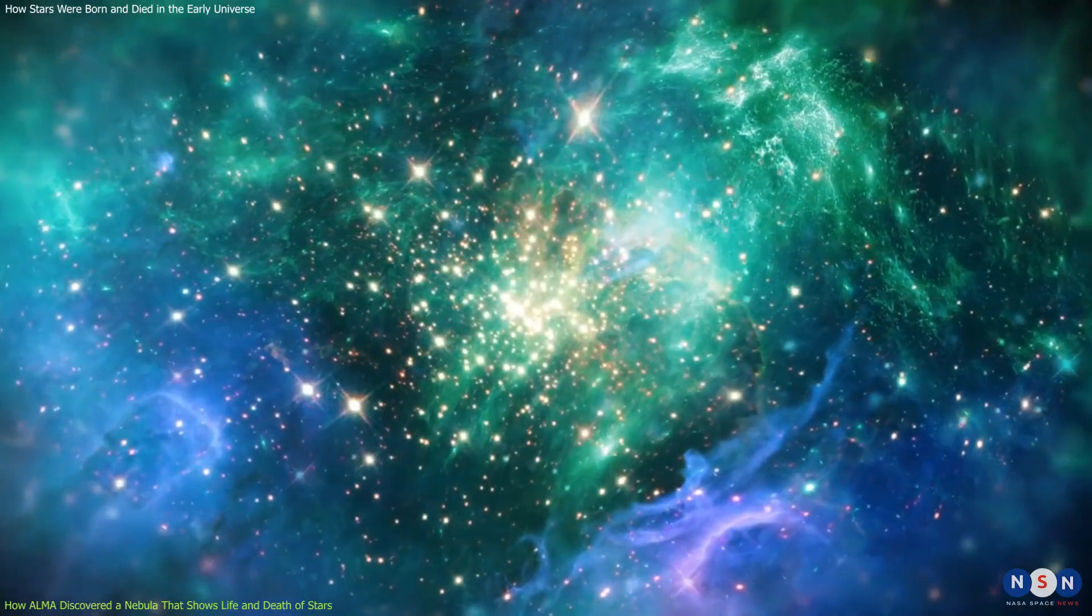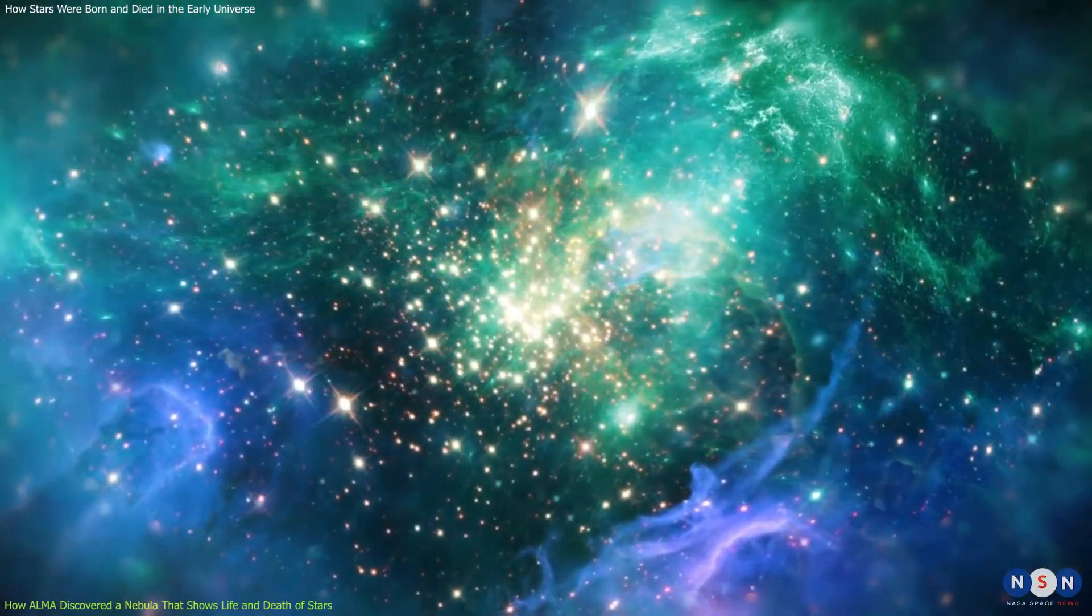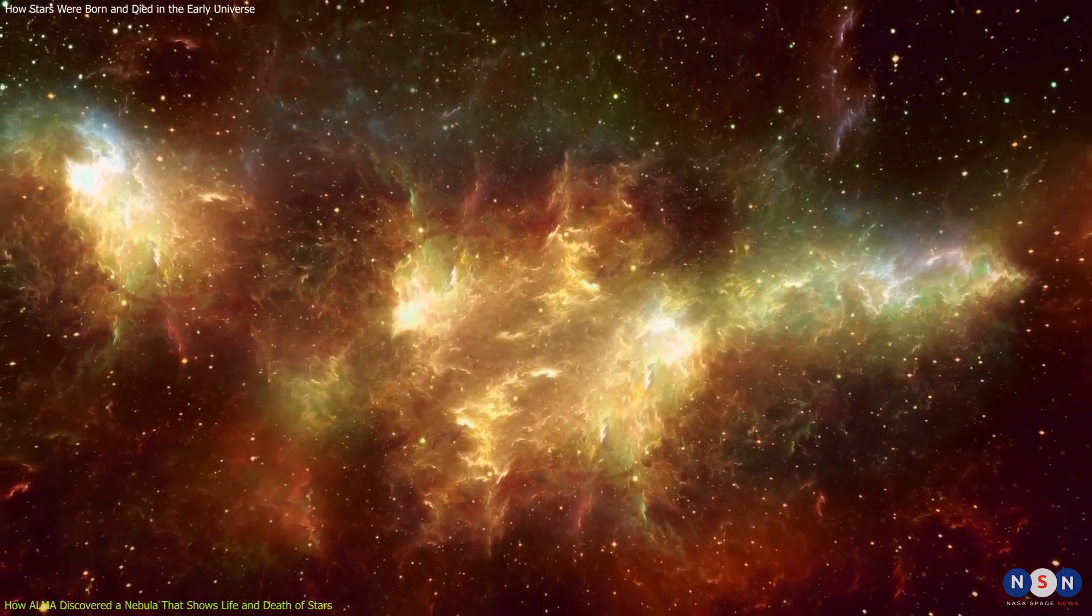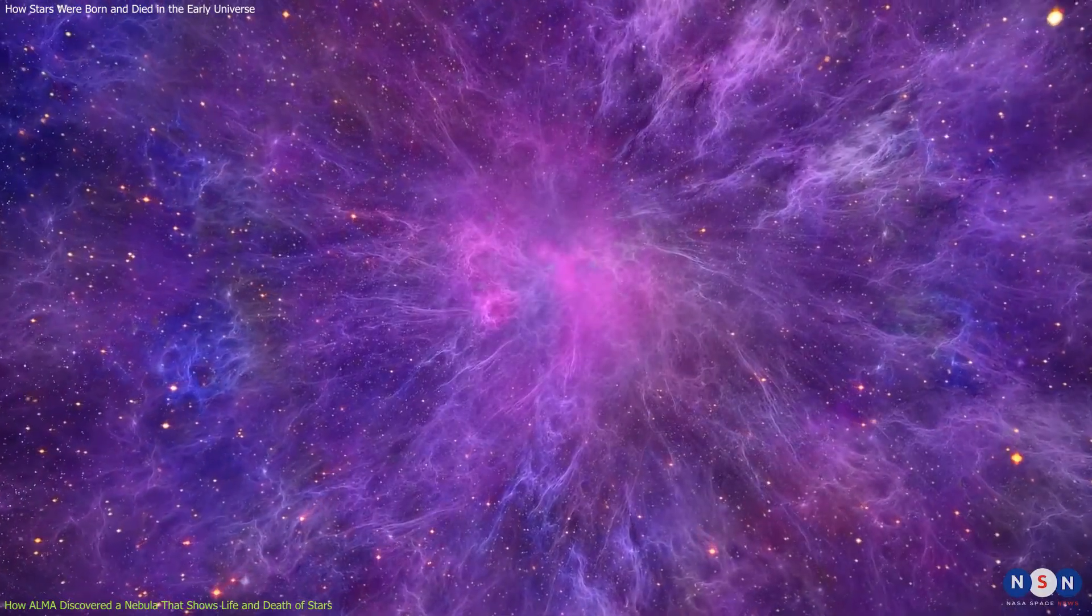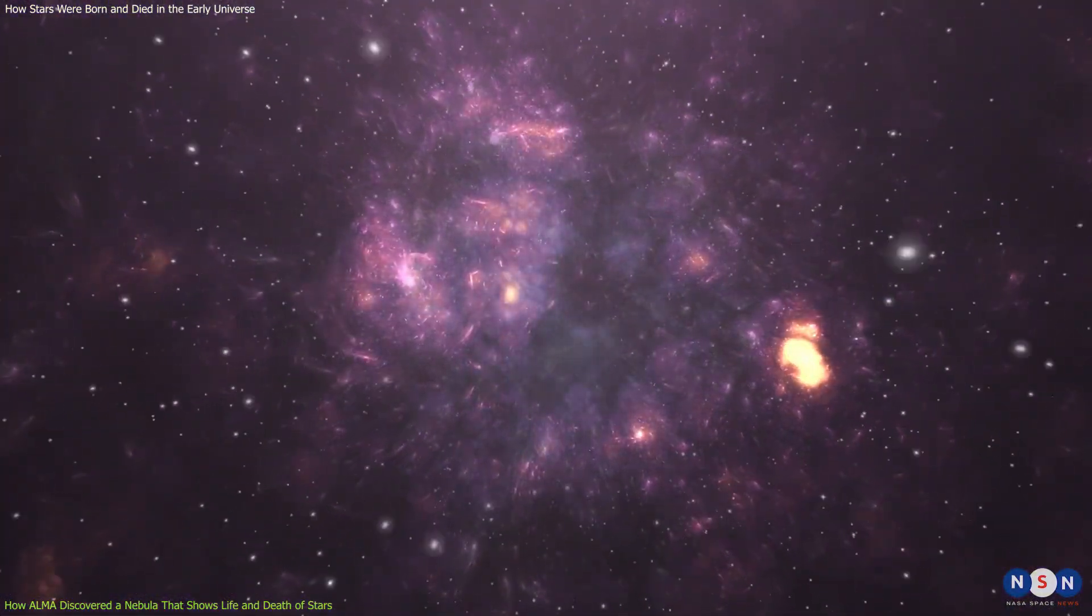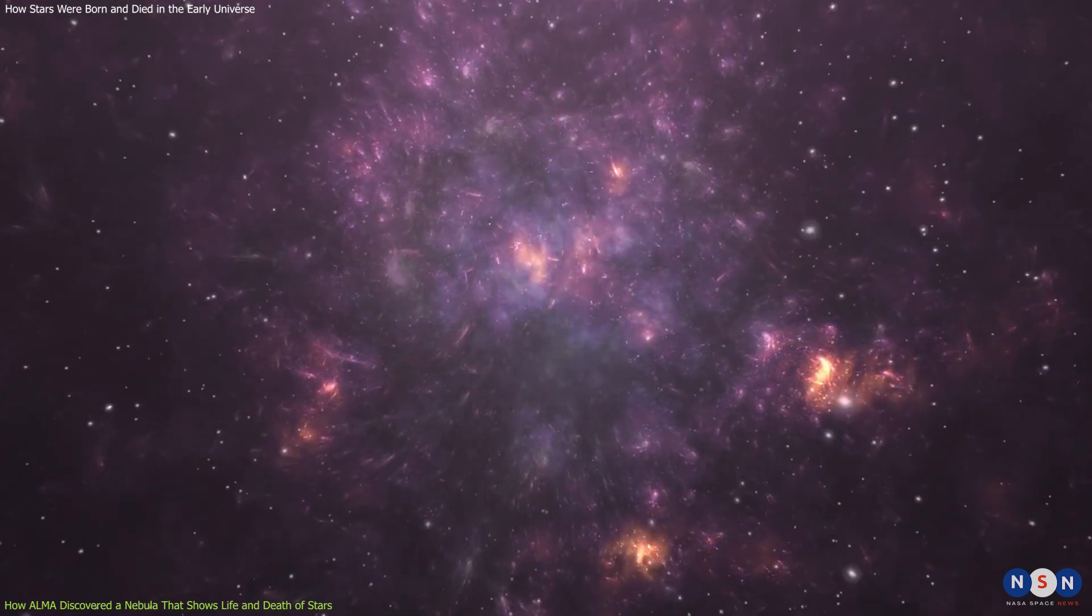A nebula can have different shapes, colors, and sizes depending on its composition, temperature, density, and interaction with nearby stars. Some nebulae are the birthplaces of stars, where gas and dust collapse under their own gravity and heat up until they ignite nuclear fusion.